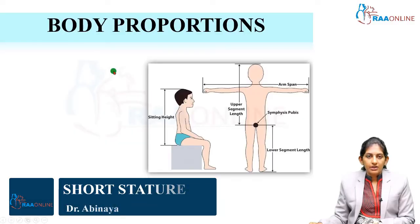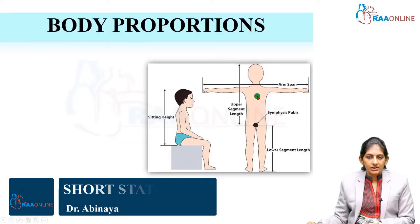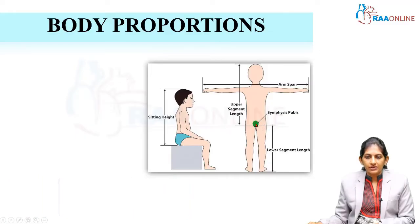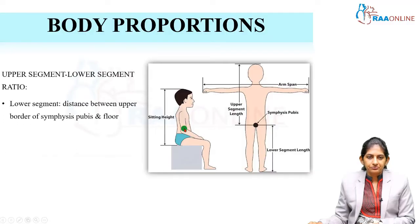In the growth lab, measure the upper segment and lower segment ratio. The lower segment is measured first from the symphysis pubis to the floor — this is the lower segment length. Then you subtract from the whole height, which gives you the upper segment. You can also take the sitting height.